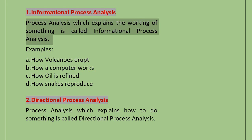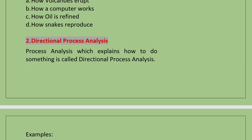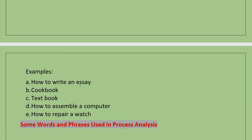Process Analysis which explains how to do something is called Directional Process Analysis — for example, how to write an essay. Cookbooks in which cooking of various dishes are explained, textbooks you are studying, how to assemble a computer, or how to repair a watch — all these are Directional Process Analysis.